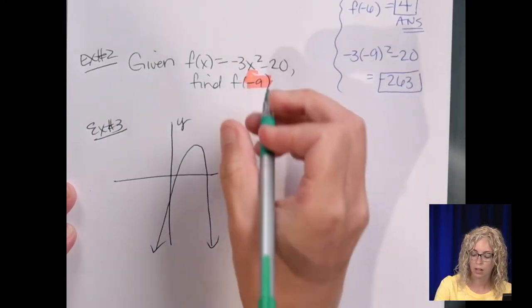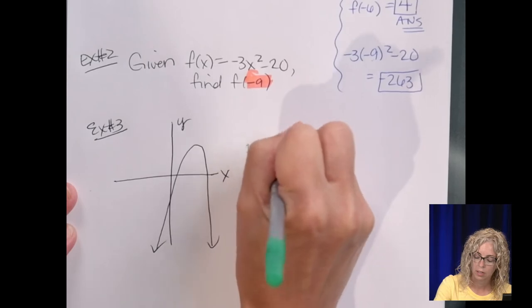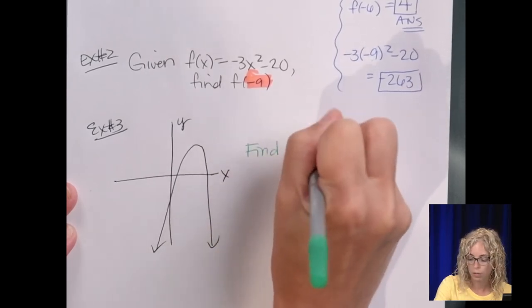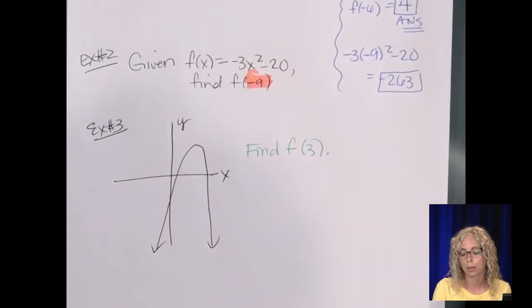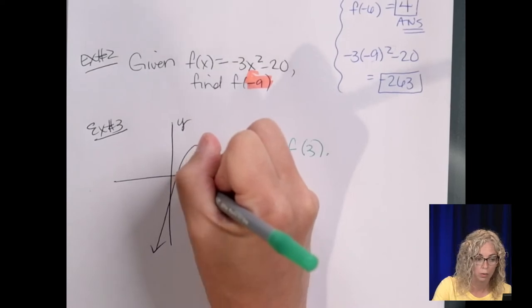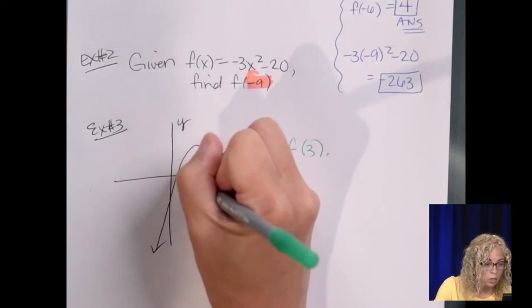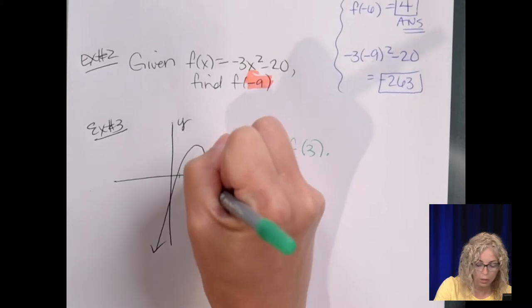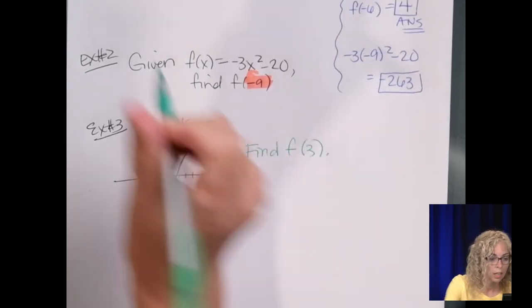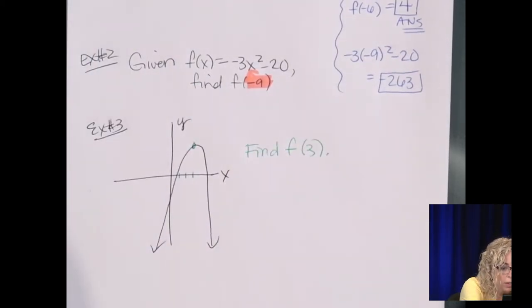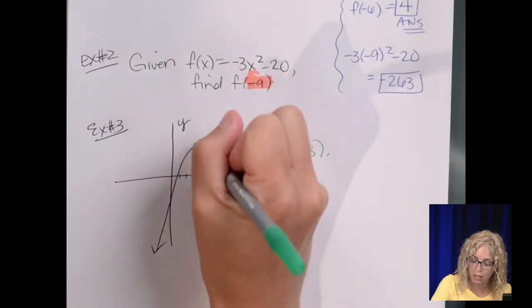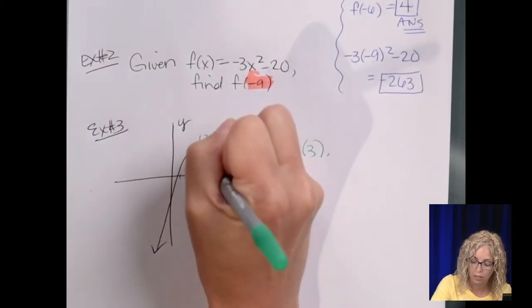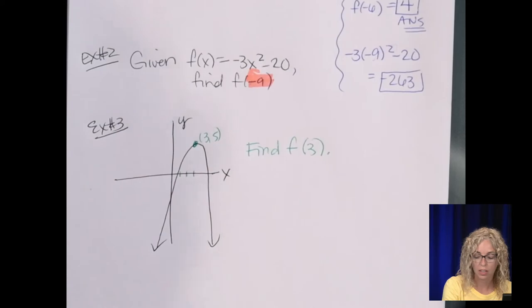And then it says, find f of three. So you want to locate the point where x is three. Okay, so we've got one, two, three. That's right here. And if we scroll up on our graph, it's the point three, five. It's right there at the vertex.